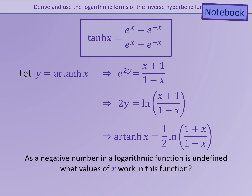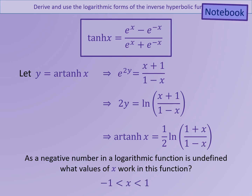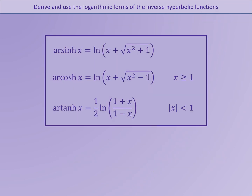As a negative number in a logarithmic function is undefined, consider which values of x would this function be valid for. This would only work for values of x between minus 1 and positive 1, as any value of x outside of this range would lead to the log of a negative number. Here is a summary of the three inverse hyperbolic functions in logarithmic form. Inverse sinh of x is valid for all real values of x. Inverse cosh of x is valid for values of x greater than or equal to 1. And inverse tanh of x is only valid for values of x where the absolute value is less than 1, equivalent to x being between minus 1 and plus 1. These three formulas are given to you in the formula book.